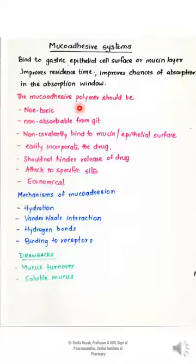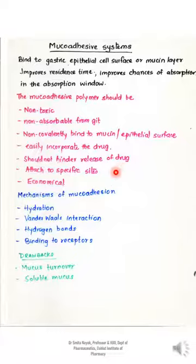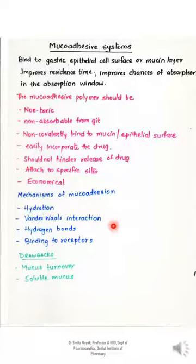The mucoadhesive polymer should be non-toxic, non-absorbable from the GI tract, non-covalently bound to the mucin or epithelial surface, capable of easily incorporating the drug, and should not hinder release of the drug from the delivery system. Also, the mucoadhesive polymer should be capable of binding to specific sites on the mucin or epithelial surface and should be cost effective. The mechanisms involved in mucoadhesion are hydration, van der Waals interaction, hydrogen bonds, and binding to receptors.